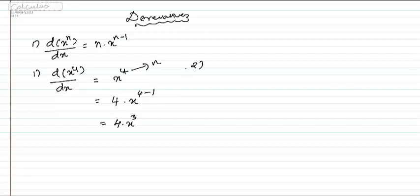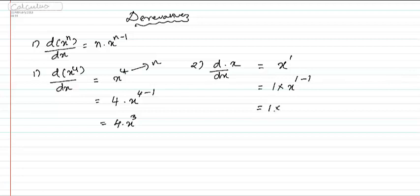Taking problem number 2, you have to differentiate x. X as a standalone will carry a power of 1. So it will be n into x to the power of n minus 1 — that is 1 into x to the power of 1 minus 1, which is x power 0. And x power 0 is 1, so 1 into 1 gives answer 1. So differentiation of x is 1.